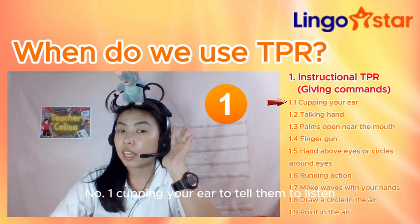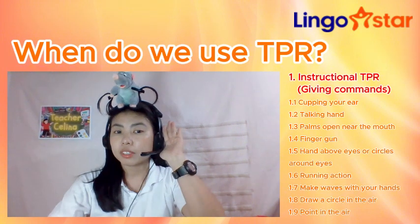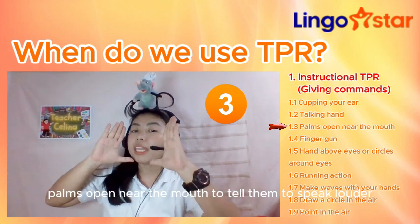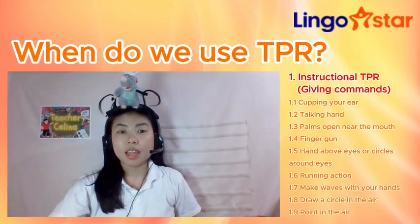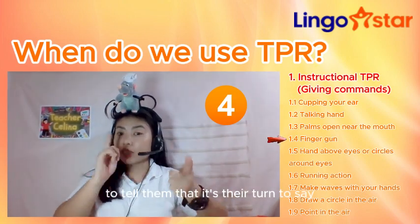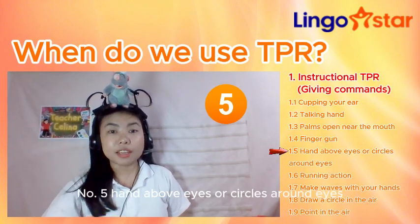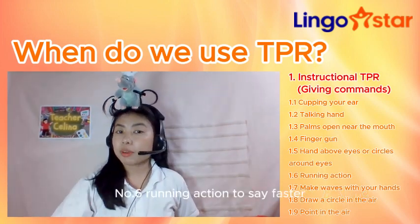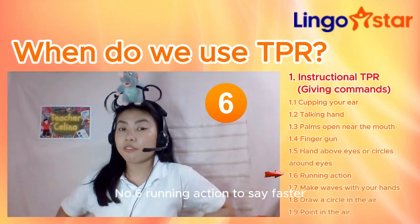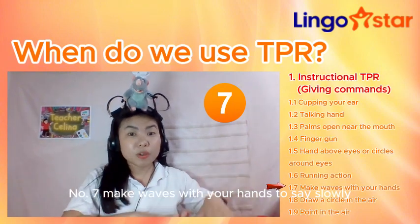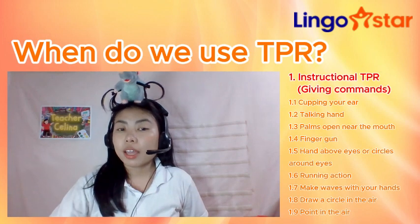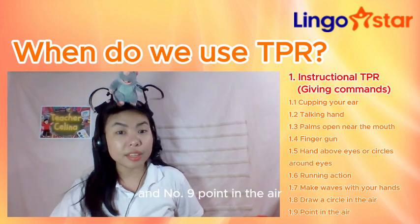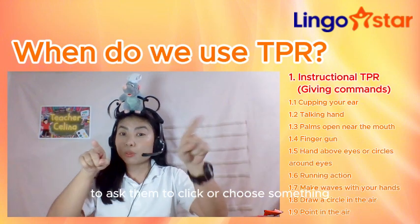Here are some examples of instructional TPR. Number one, cupping your ear to tell them to listen or to show that you're listening and you want them to speak. Number two, talking hand — this shows that you want them to talk. Number three, palms open near the mouth to tell them to speak louder. Number four, finger point to tell them it's their turn to say or do something. Number five, hand above eyes or circles around eyes to tell them to look at something or look for something. Number six, running action to say "faster." Number seven, make waves with your hands to say "slowly." Number eight, draw a circle in the air to ask them to encircle something. And number nine, point in the air to ask them to click or choose something.